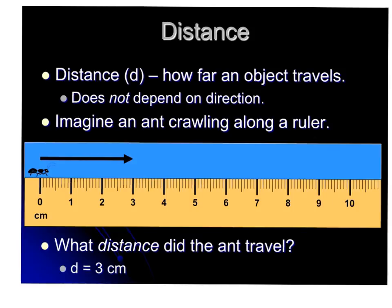Now let's talk about distance. Distance is how far an object travels. This does not depend on direction, so it is a scalar quantity. Imagine this ant, and it's crawling along a ruler. Notice that the ruler is in centimeters, and it is going to be crawling 3 cm. So what would the distance be of the ant? Well, it would be 3 cm.